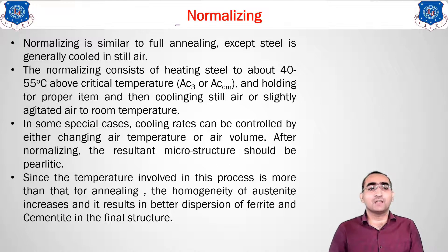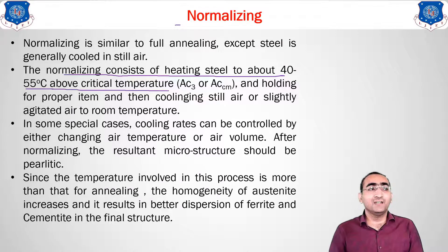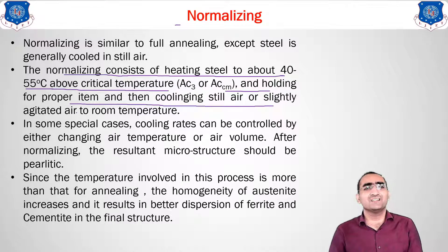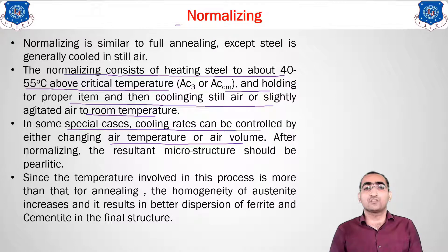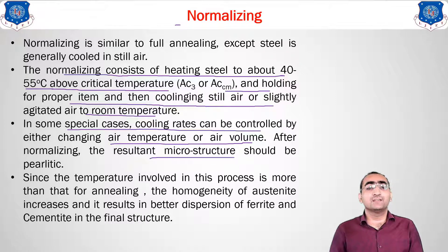The steps we follow in normalizing: heating the material about 40 to 55 degrees above the critical temperature, which is around 910°C, holding it for a proper amount of time, and then cooling in air or slightly agitated air to room temperature. In some special cases the cooling rate can be controlled by air temperature or air volume. After normalizing, the microstructure should be finer pearlite.